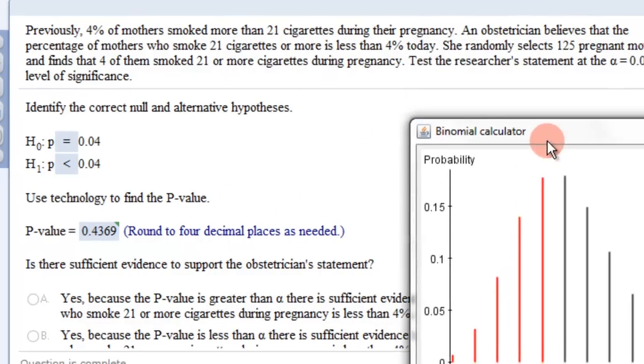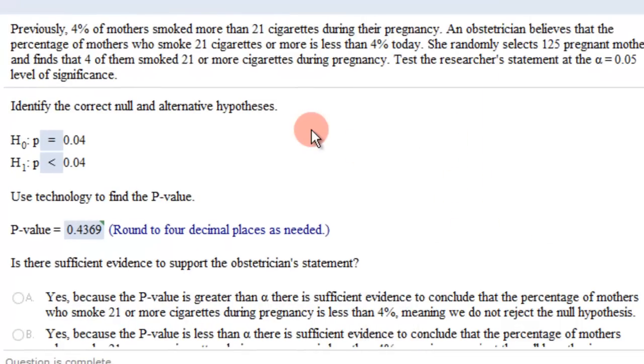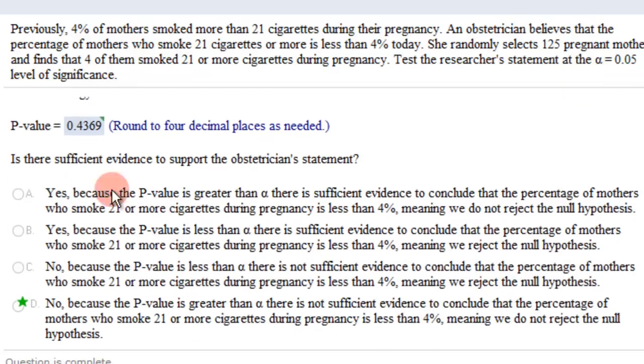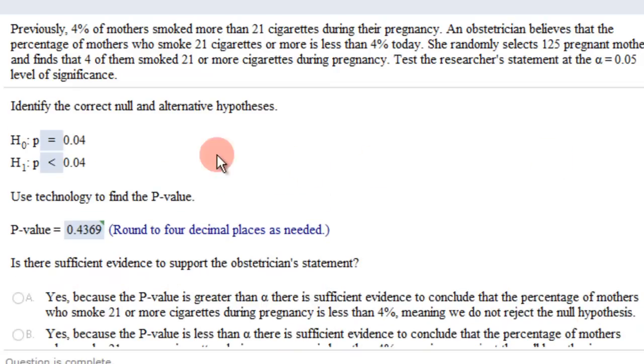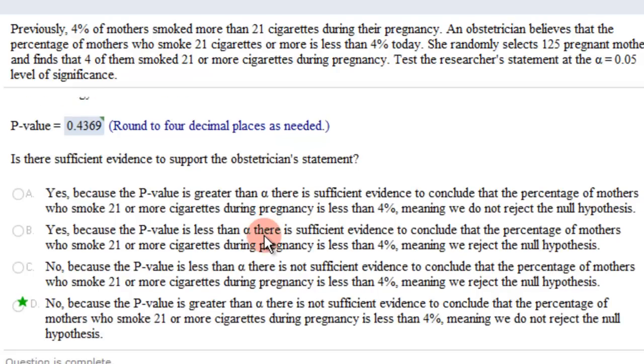Now, again, this p-value is obviously not less than this level of significance. It's greater than. So, we are not going to reject the null hypothesis. And so, the correct answer is, is there significant evidence to support the obstetrician's statement? Well, the statement is that she's thinking that there's now less than 4% that smoke. And no, we do not have enough evidence to support that because this just says not to reject the null hypothesis. So, don't reject this. So, it's about 4%. There's not enough evidence to support otherwise.